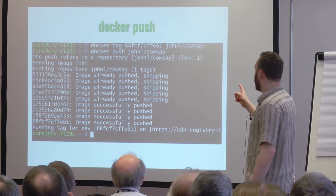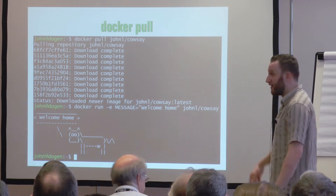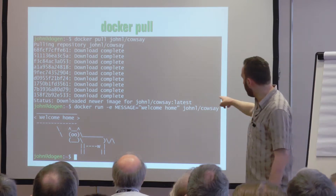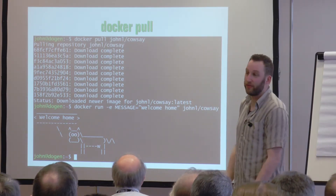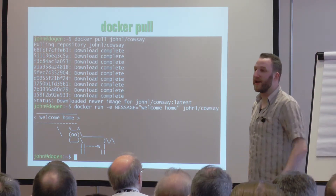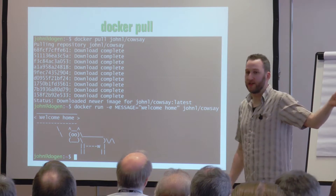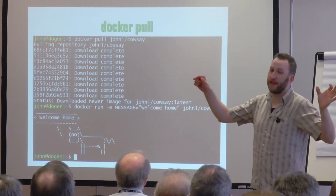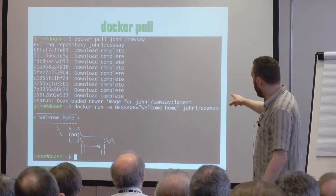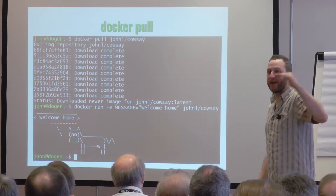Now anyone in the world can pull my cowsay image. On my laptop I do docker pull johnl/cowsay — it downloads all the Ubuntu layers and then my cowsay layers. When I run it, I get cowsay — the exact same bits I had on my other system, running in exactly the same way. The question was whether if someone updates the Ubuntu image, does it force my image to be rebuilt? No — because when I did FROM ubuntu at build time, that was translated into an ID. When someone updates Ubuntu it gets a new ID; my cowsay image is the binary result of the build and will always be the same everywhere.